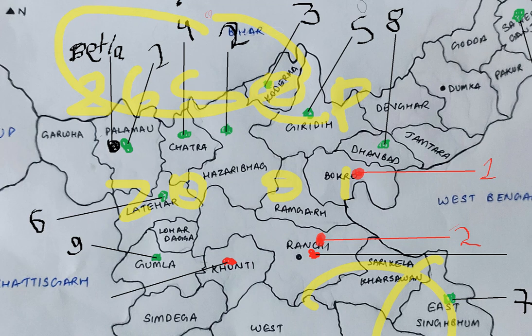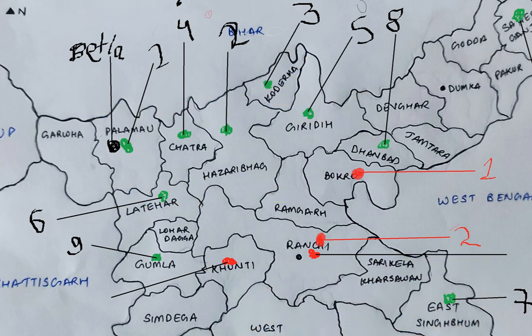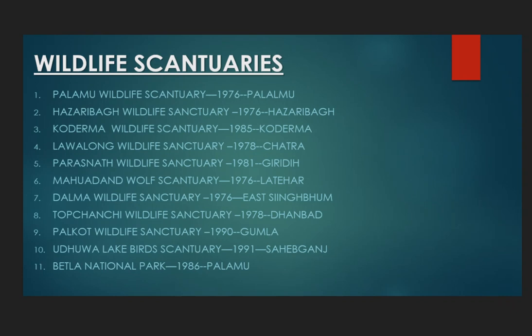The Project Elephant in Dalma aimed at ecological restoration and conservation of natural habitats and migratory routes, protecting elephants from poachers and minimizing human pressure on crucial elephant habitats.